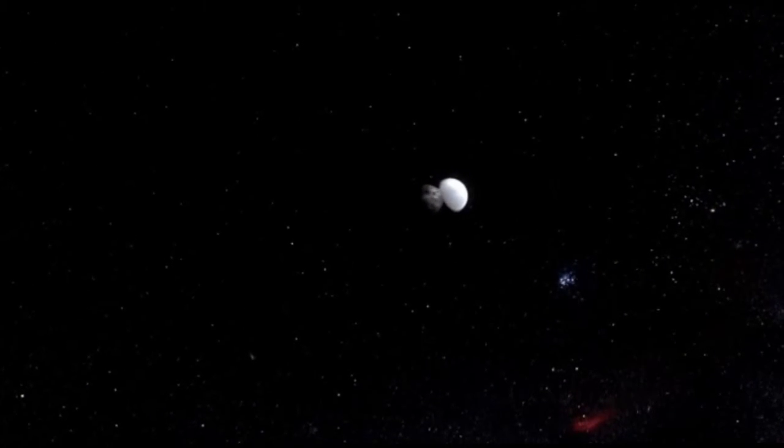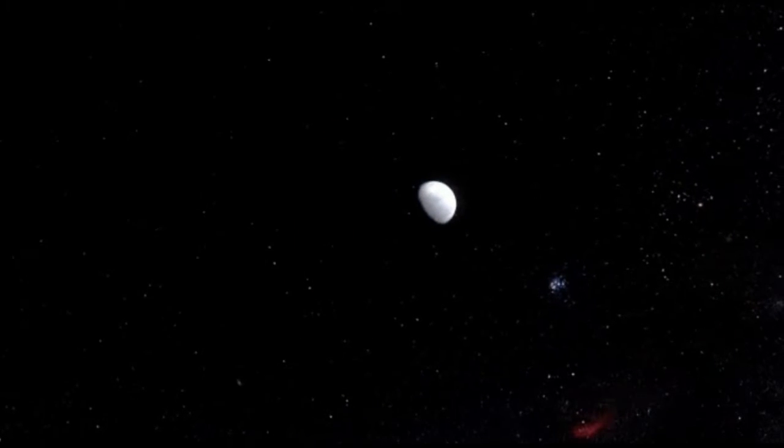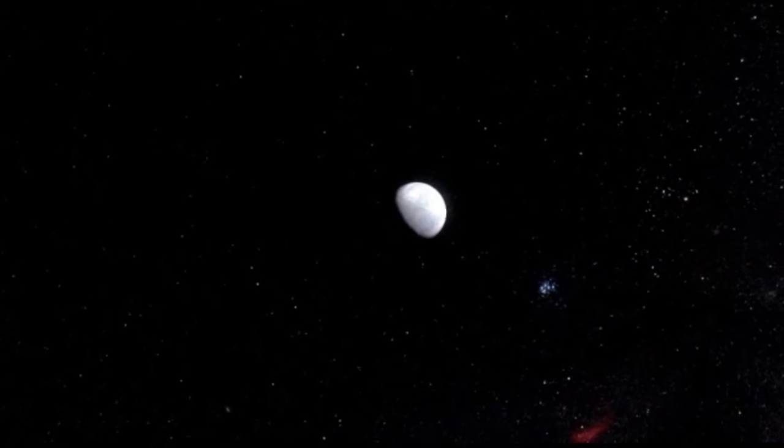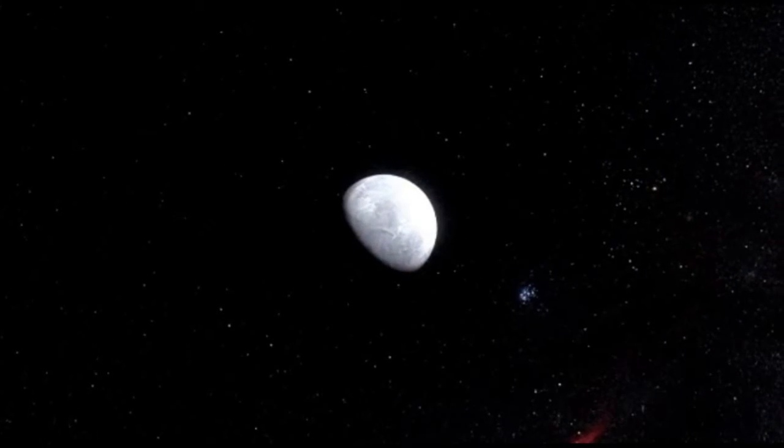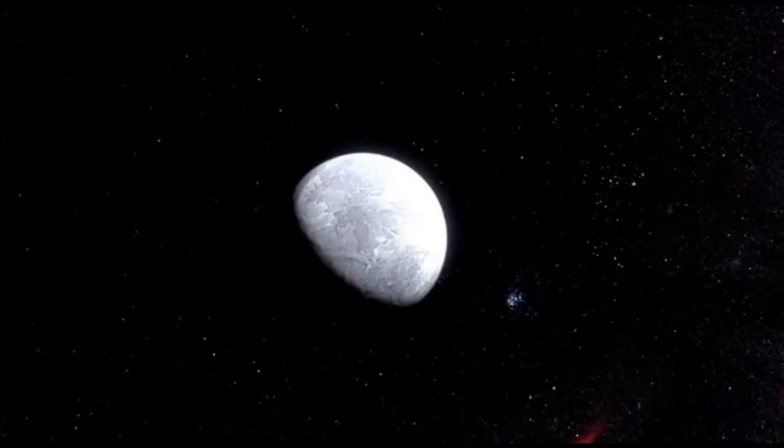Eris is three times farther from the Sun than Pluto at the moment, and until now was believed to be about 25% bigger. But the new observations show that Eris is in fact almost exactly the same size as Pluto, with a diameter of around 2,330 kilometers.